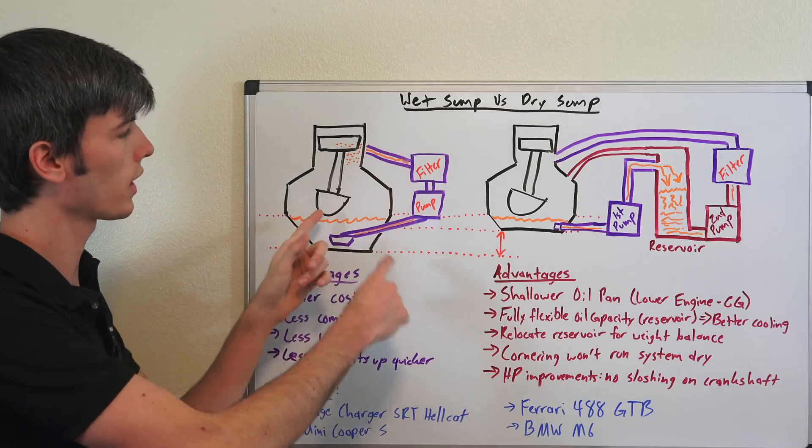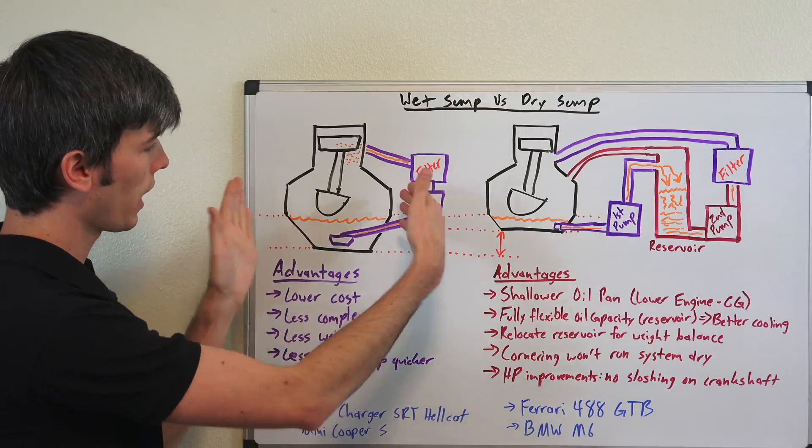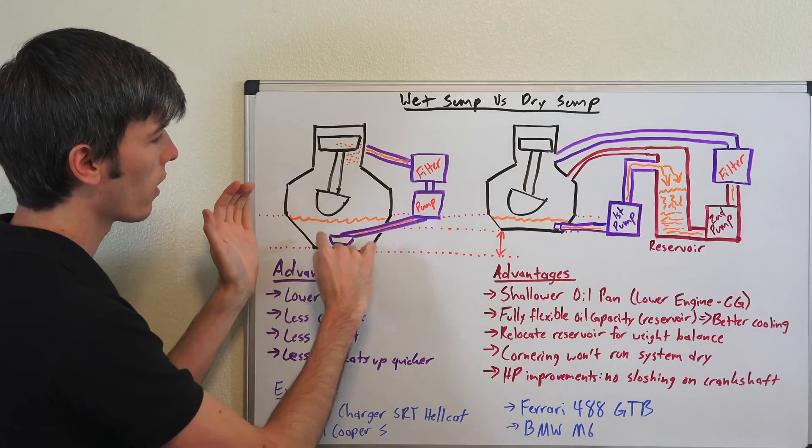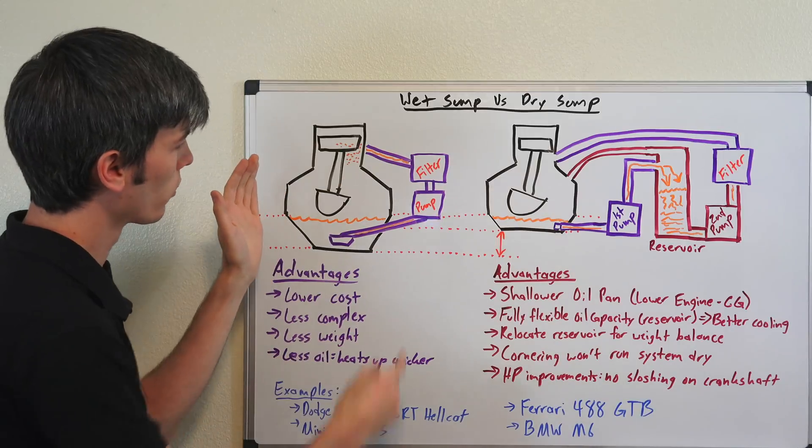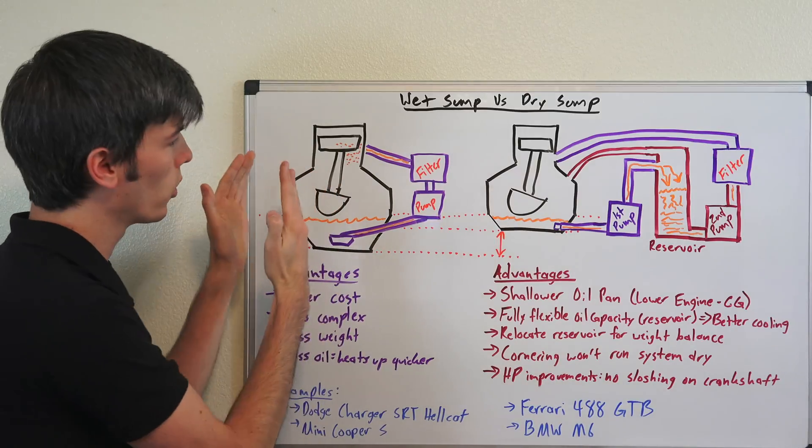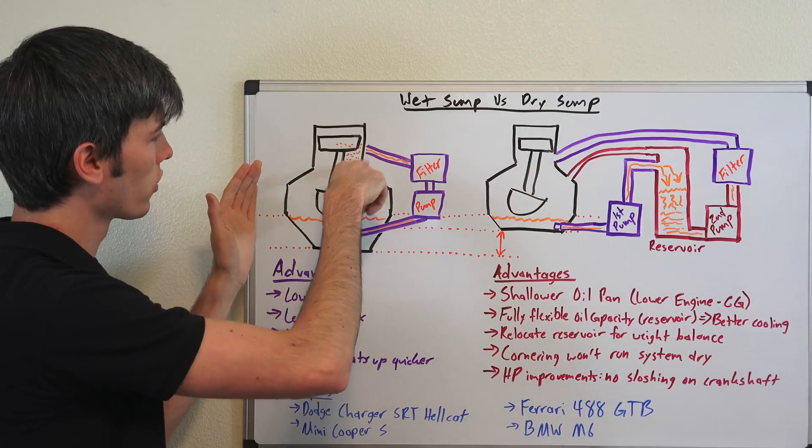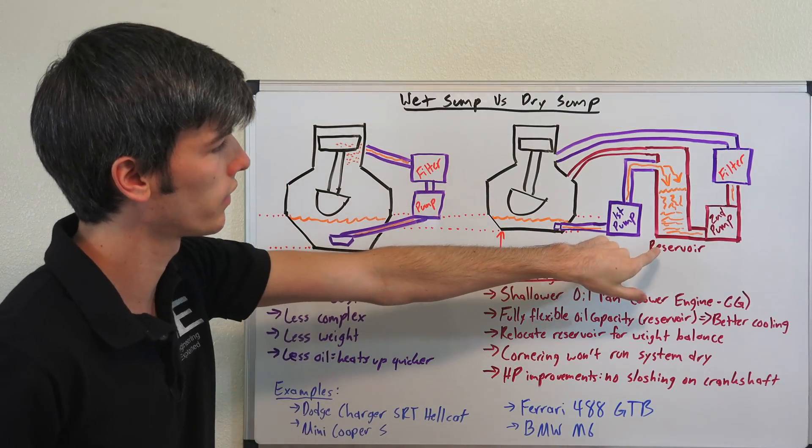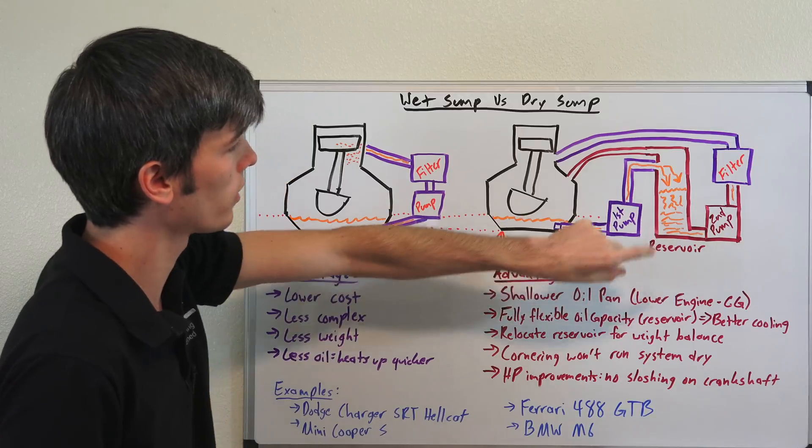So you can imagine here, if you're taking this car around a really heavy corner, that oil could slosh up to the side here and then your pickup tube could have some air and then you're going to have air circulate through your engine. Now if you sustain that corner for long enough, that means your engine is going to be burning up because it's not going to have any oil lubricating it.